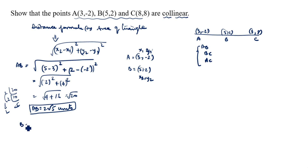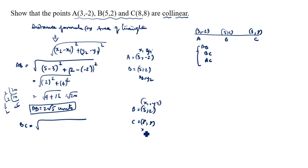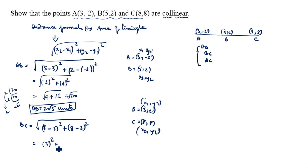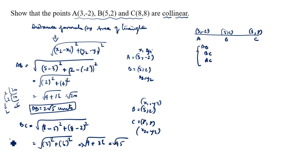Now find BC. B is (5, 2), so x1 = 5, y1 = 2. C is (8, 8), so x2 = 8, y2 = 8. BC = √((8 - 5)² + (8 - 2)²) = √(3² + 6²) = √(9 + 36) = √45.